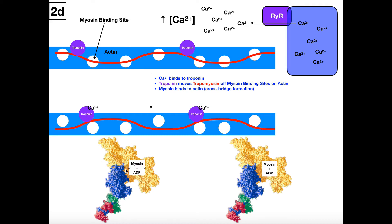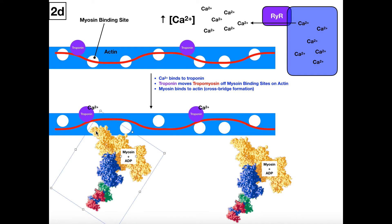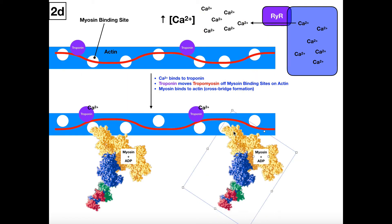That is going to allow the myosin heads to actually interact with the binding site on actin. This process of the myosin heads binding to the actin is called crossbridge formation. In order to have sarcomere shortening and muscle contraction, we have to have crossbridge formation. To review: calcium binds to troponin, troponin moves tropomyosin off the myosin binding sites on actin, and that allows the myosin to come over and bind to actin — that is the process of crossbridge formation.